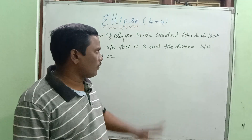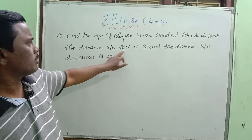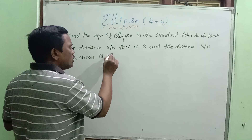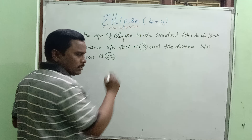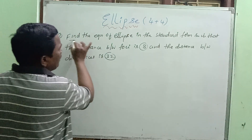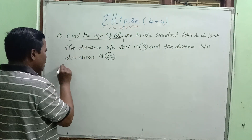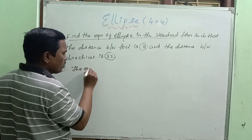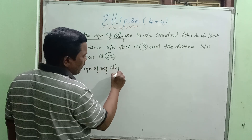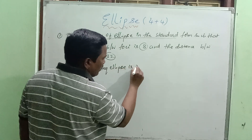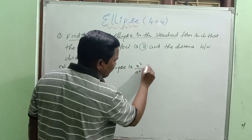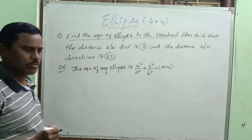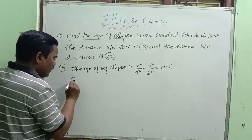First question: Find the equation of the ellipse in standard form such that the distance between the foci equals 8 and the distance between the directrices equals 32. The required ellipse is x²/a² + y²/b² = 1, where a > b.